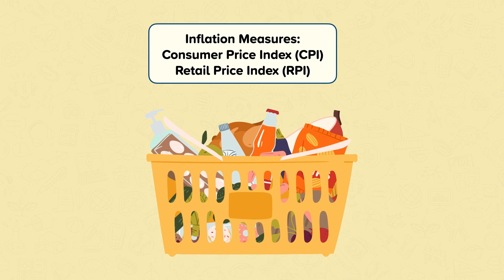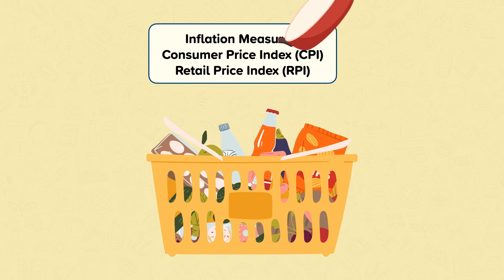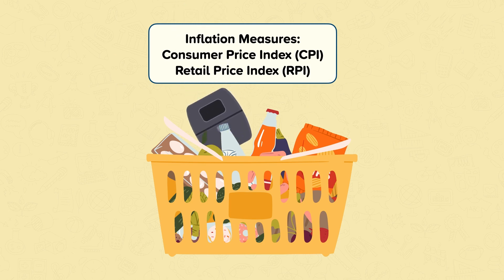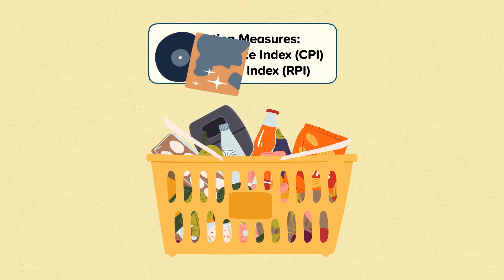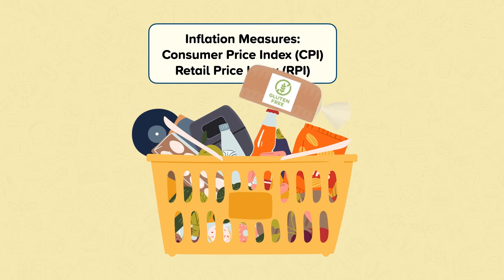The basket of goods is regularly updated to reflect changes in the things we buy. Some things that have recently been taken out are hand hygiene gel, hot rotisserie cooked chicken and bakeware. Some recent additions are air fryer, vinyl music, gluten-free bread and edible sunflower seeds.